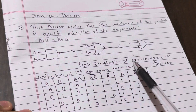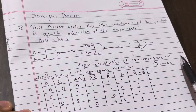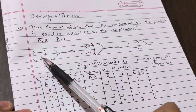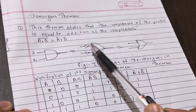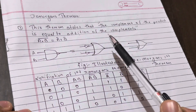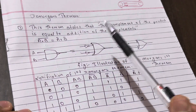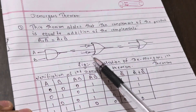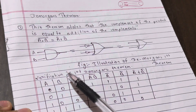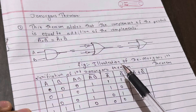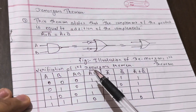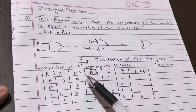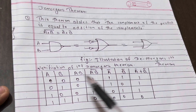Here we can see the illustration of De Morgan's first theorem using the NAND gate. And now we will look at the verification of the first De Morgan's theorem, which is also important for the exam.